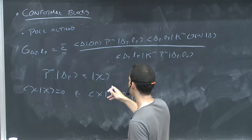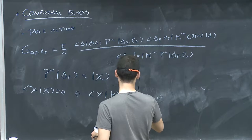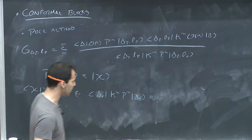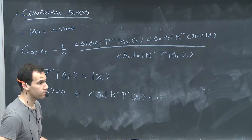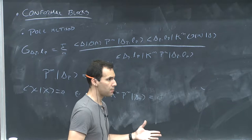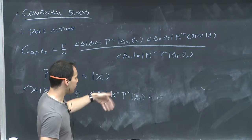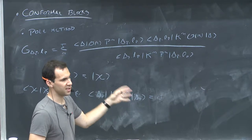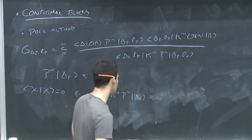The only possibility is that K kills the state. But if K kills the state, then this is actually a primary. So when the descendant becomes null, it becomes a primary at the same time — it's a primary and a descendant, and that's why its norm is zero. If you act with more P's and compute the norm of those states, it's also going to be zero, because in the end it's always proportional to the original norm of the primary. Such a state with all its descendants forms a separate representation of the conformal group.